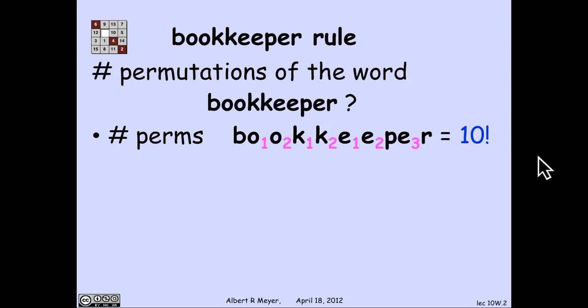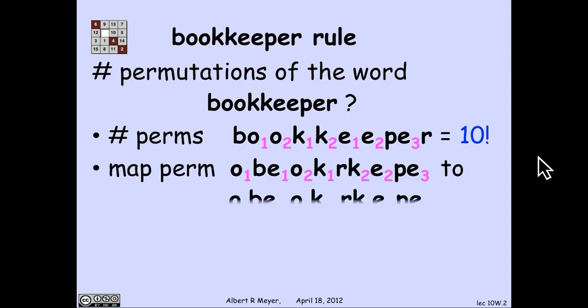My strategy is to use the division rule to count the number of patterns of letters in the word with no subscripts. The way I'm going to do that is take one of these subscripted words and erase the subscripts, so I'm mapping it to the same permutation of letters with no subscripts. I've taken an arbitrary permutation of the subscripted word and erased the subscripts and consolidated the letters.